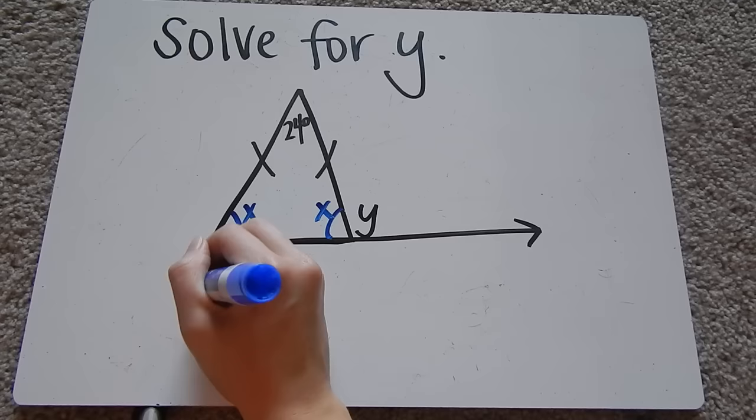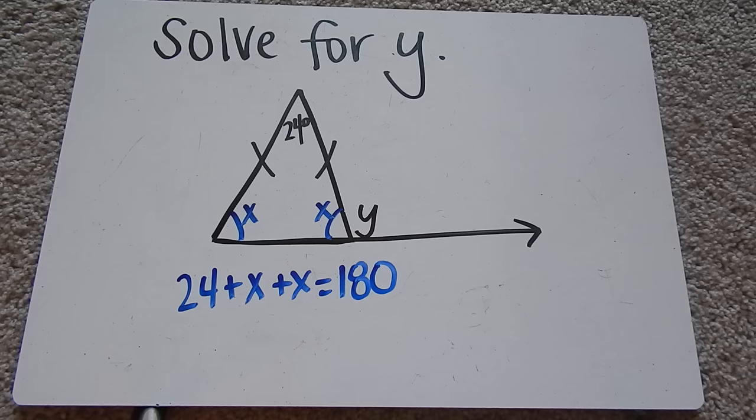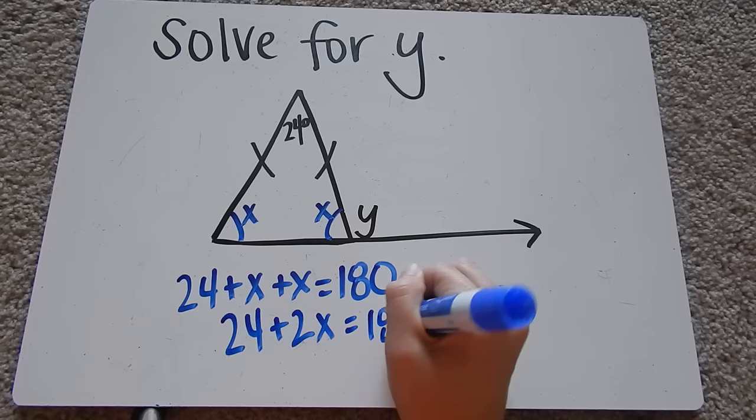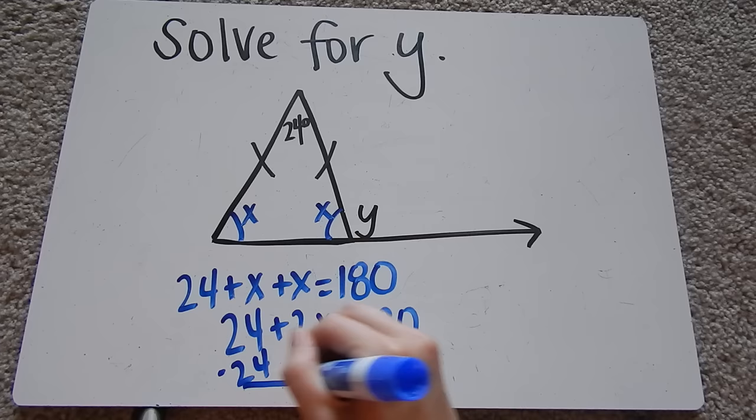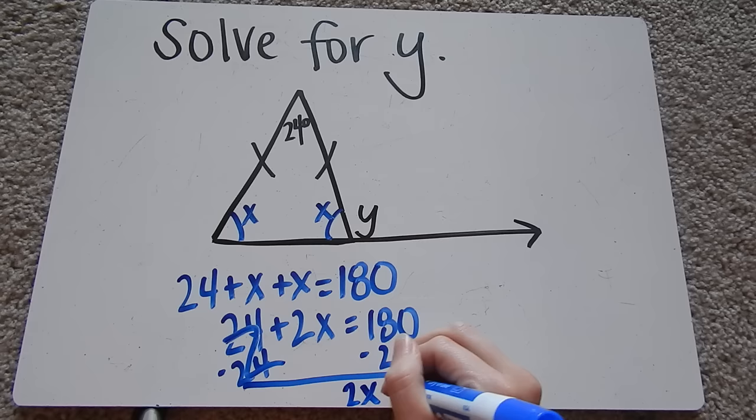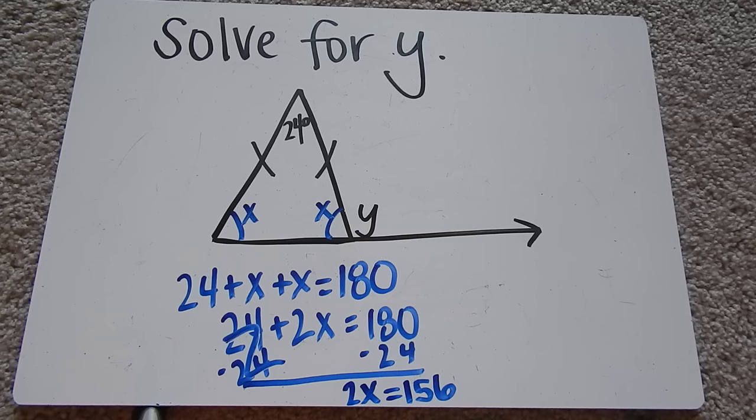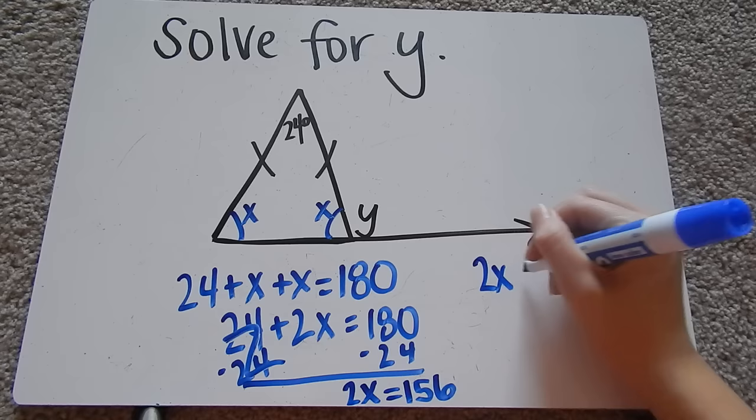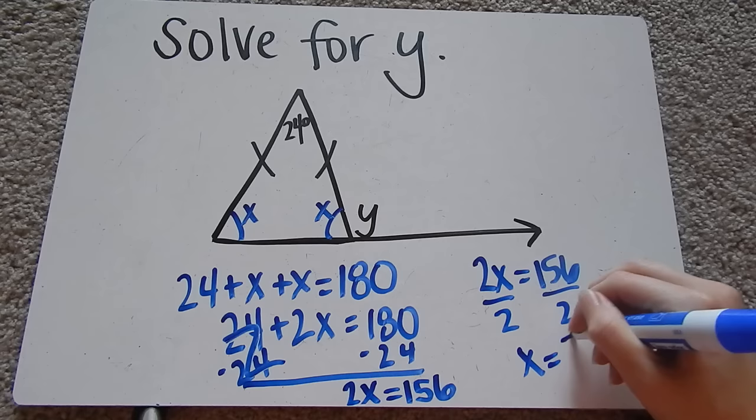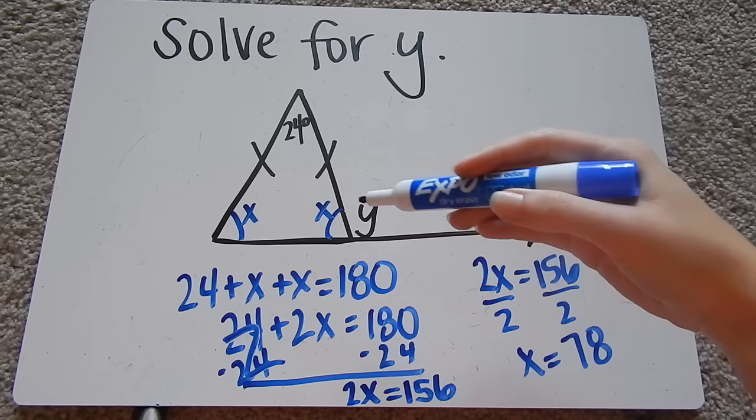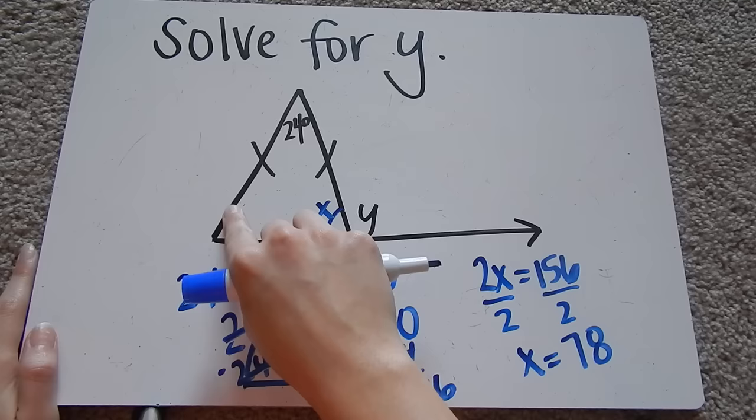All three angles of a triangle add up to 180. So we do 24 plus x plus x equals 180. So 24 plus 2x equals 180. Subtract 24 from both sides. The 24s will zero out. We get 2x equals 156. And then we're going to divide both sides by 2. So 156 divided by 2. So x equals 78. So both of these angle measures equal 78.